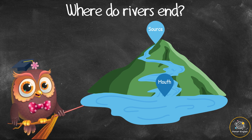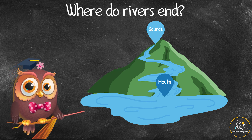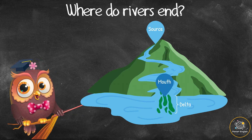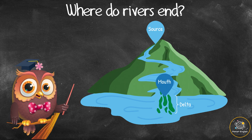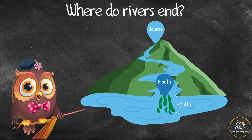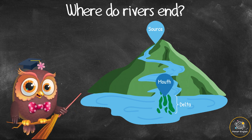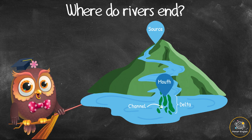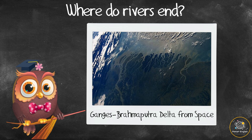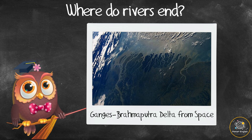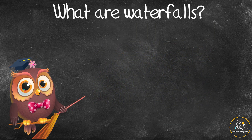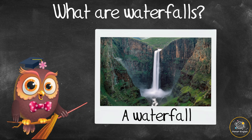Where do rivers end? The end of a river is called its mouth, where the water empties into a larger body of water like a lake or ocean. River mouths sometimes form a delta — a triangular-shaped piece of land formed when material in the water sinks to the bottom and builds up over time, creating channels and little islands where plants grow. The Ganges-Brahmaputra Delta in Bangladesh and West Bengal empties into the Bay of Bengal and is the world's largest delta.